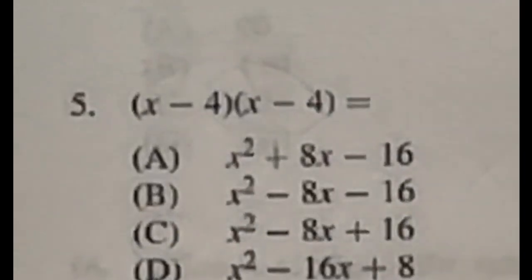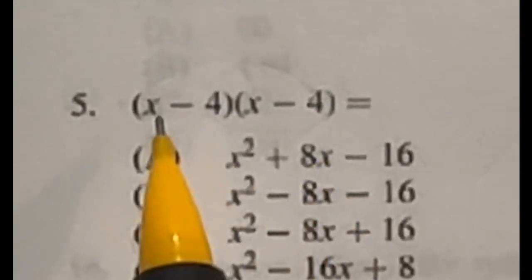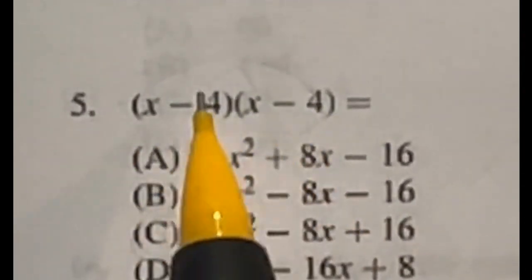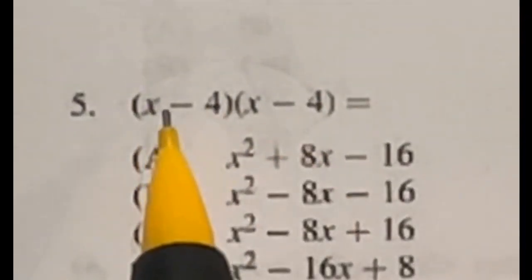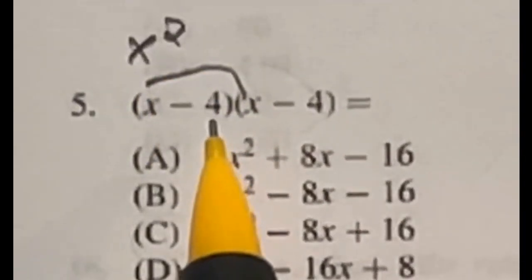Some of you guys may remember this as a FOIL question, because that's a word often used to help you remember to distribute each of these terms to each of the other terms in the other parenthesis. So let's go through that. The first letter is usually F, because you take the two first terms and multiply them together, which is going to give us X squared.